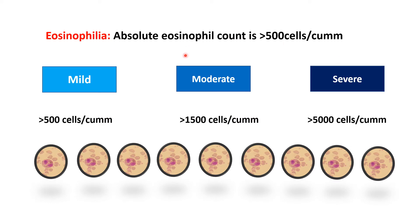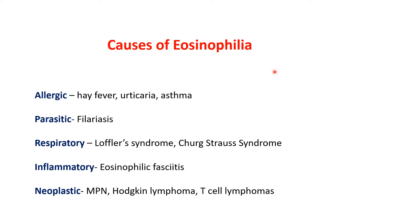Eosinophilia occurs when the absolute eosinophil count exceeds 500 cells per cubic millimeter. Mild eosinophilia is 500–1500, moderate is 1500–5000, and severe is above 5000. Causes include allergic conditions like urticaria, hay fever, and asthma; parasitic infections such as filariasis; respiratory diseases like Löffler syndrome; inflammatory causes like eosinophilic fasciitis; and neoplastic causes such as myeloproliferative neoplasms, Hodgkin lymphoma, and T-cell lymphomas.